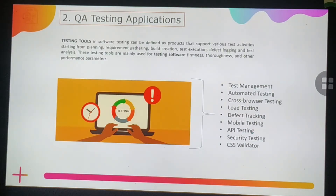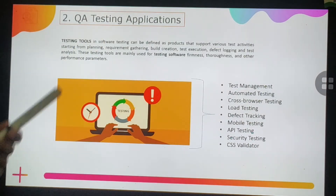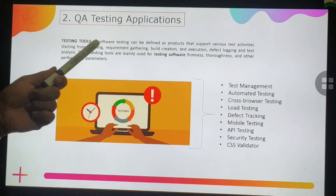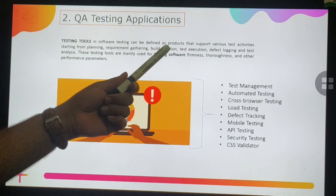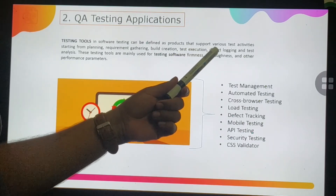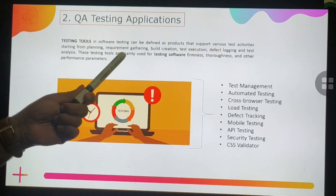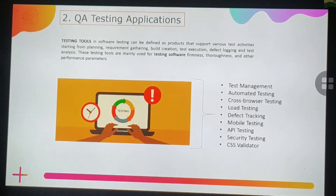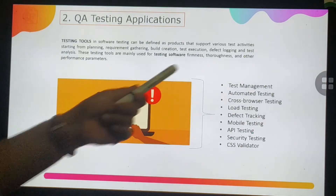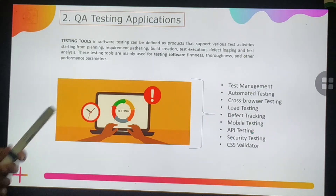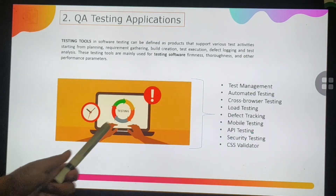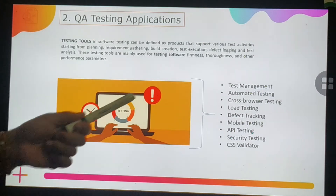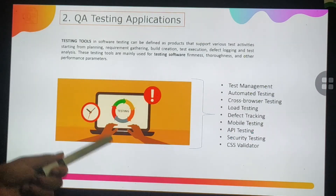The second major technology area is QA testing. Testing tools are products that support various test activities including planning, requirement gathering, build creation, test execution, defect logging, and test analysis. Different types of testing include test management, automated testing, cross-browser testing, load testing, defect tracking, mobile testing, API testing, security testing, and CSS validation. Test management tools include X-Ray, TestPad, PractiTest, TestRail, and TestMonitor.